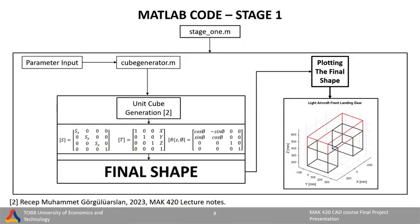The first stage in our MATLAB study is to generate a primitive basic shape of our final prototype. To do this, we use the MATLAB code shown on the slide. Inside the code, we wrote a function called cube generator. This function generates a unit cube at the center of the global coordinate system, and by using the rigid body transformations depicted in the slide, we generate the final shape. After making the necessary calculations, this code plots the final shape. As you can see, we are planning to generate a U-shaped design.